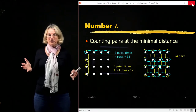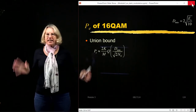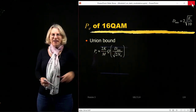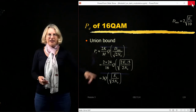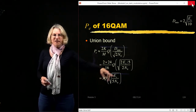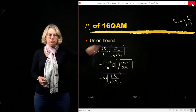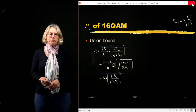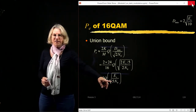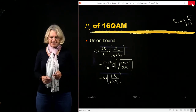With everything needed, I apply the union bound. With K=24 pairs and dmin known, the expression gives 2 times 24 divided by M=16, and moving the factor of 2 inside the square root. The result is 3 multiplied by the Q function with argument the square root of ES over 5N₀. This gives the probability of error expression for 16-QAM, which can also be written in terms of EB.